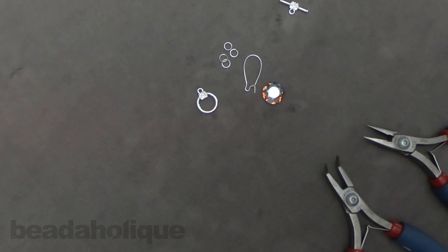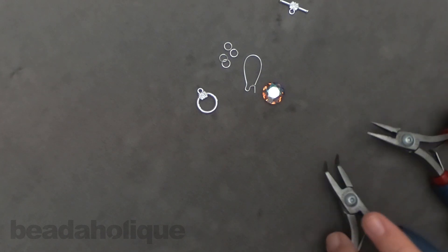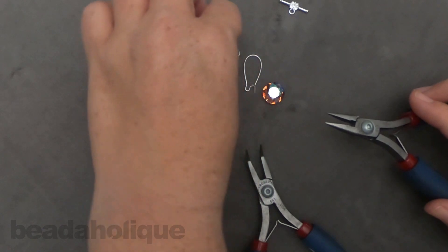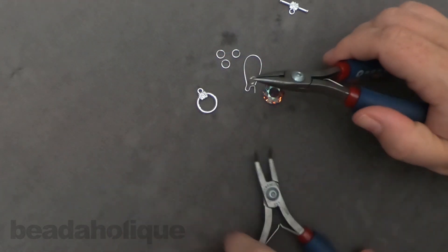So I'm just going to use two pairs of chain nose pliers here and this is going to be super simple. I have some six millimeter 20 gauge jump rings here and all I'm going to do is give it a little twist to open.